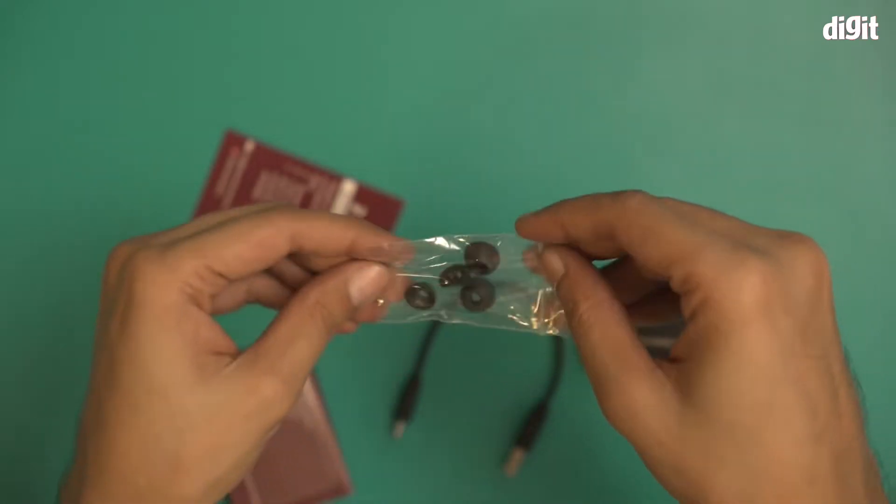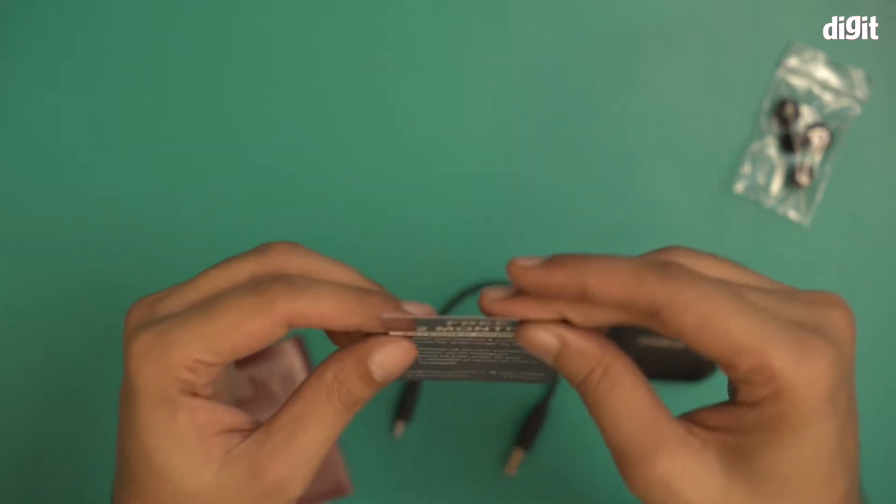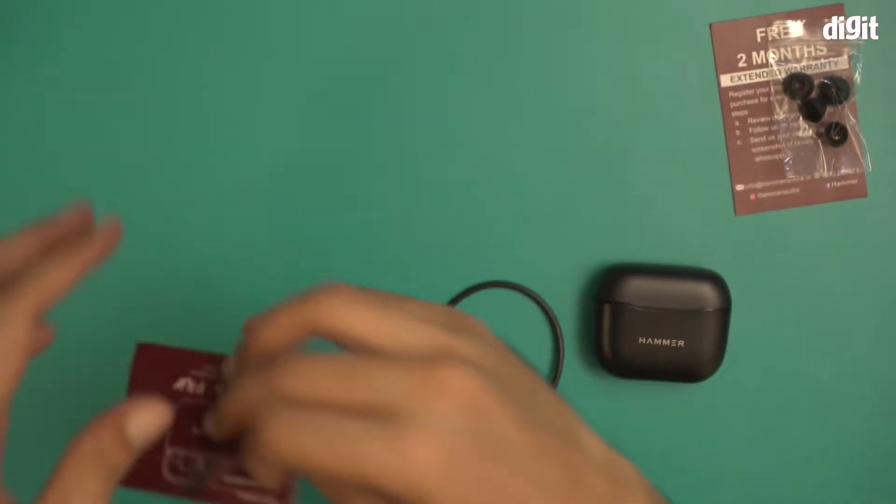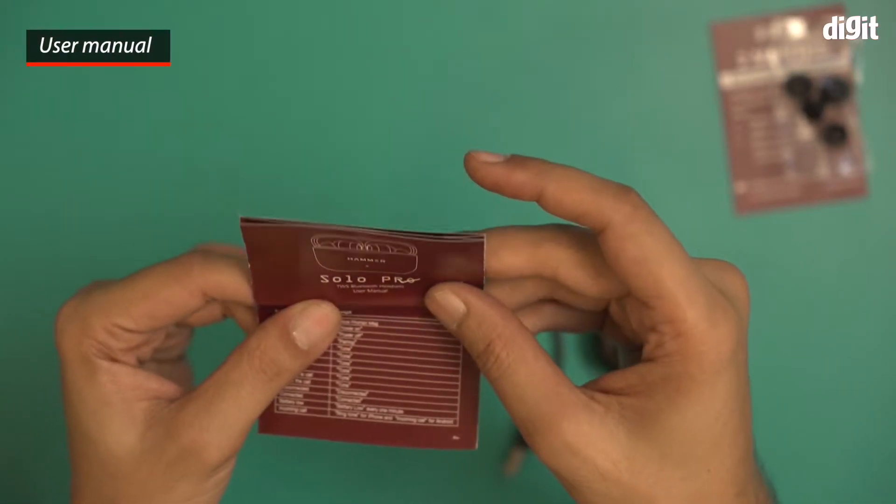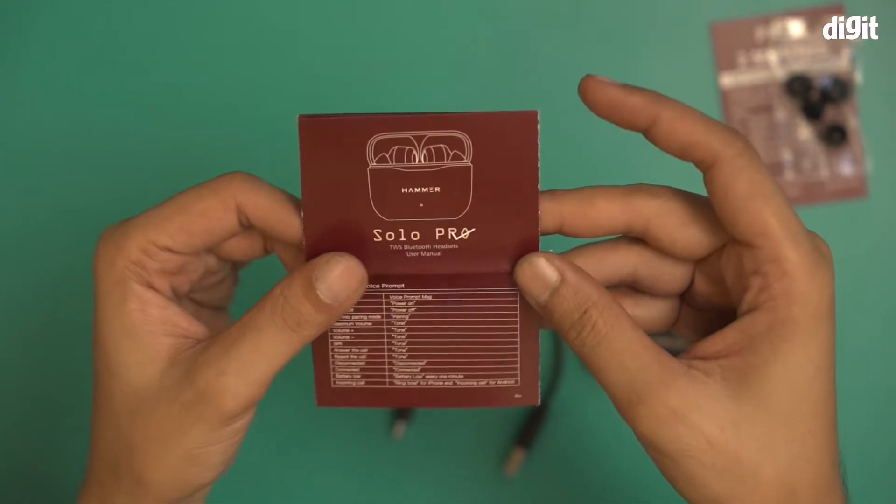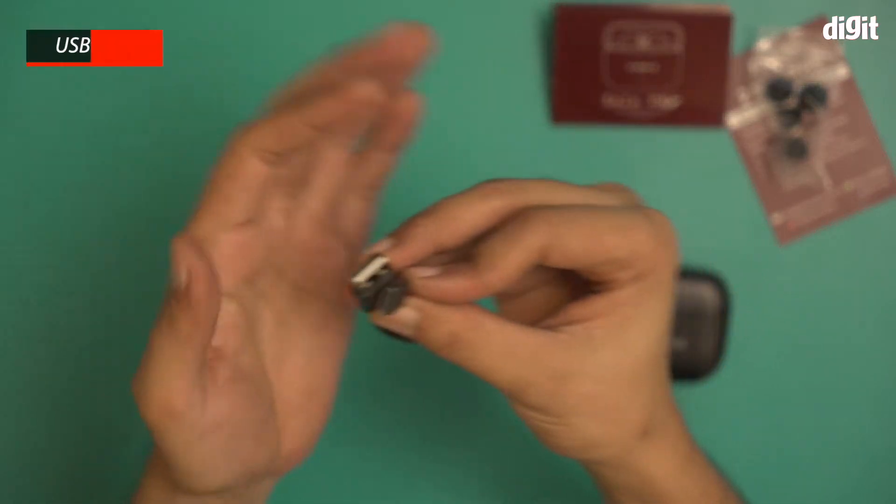This is the extended warranty card for this particular product and this is the user manual for the Hammer Solo Pro True Wireless Bluetooth Headsets. We have a USB-C type charging cable for the headset.